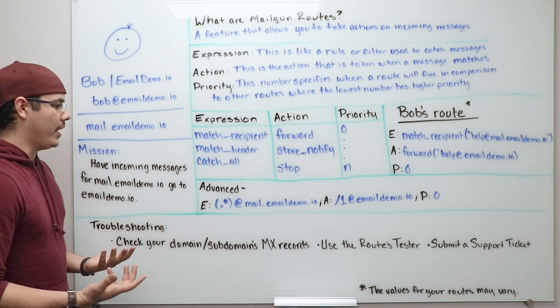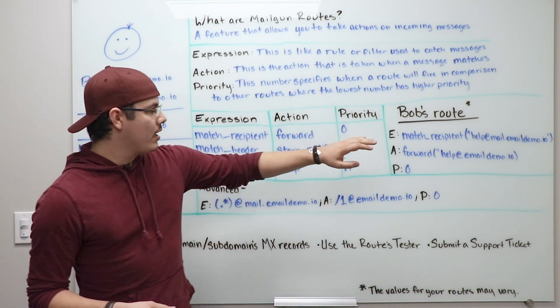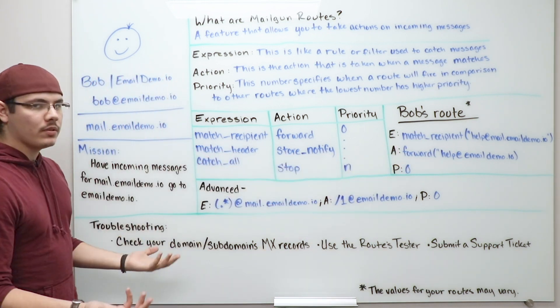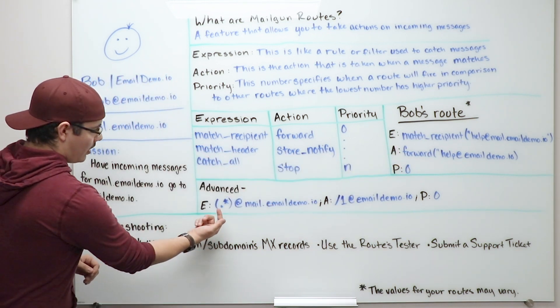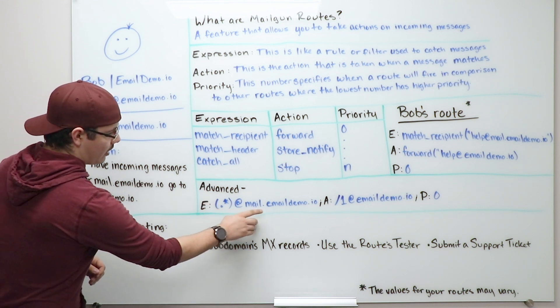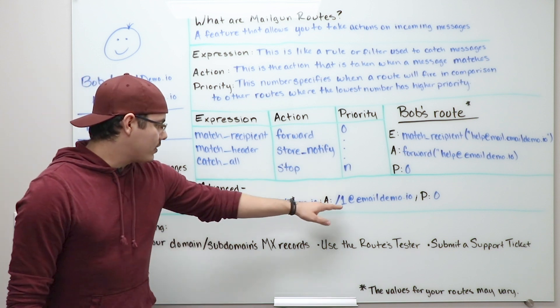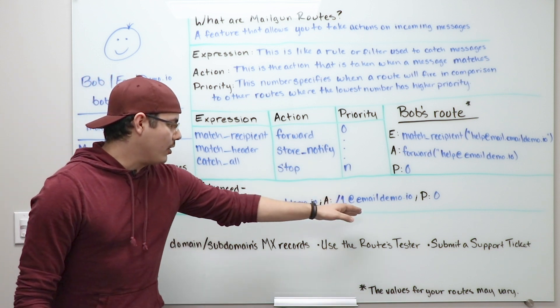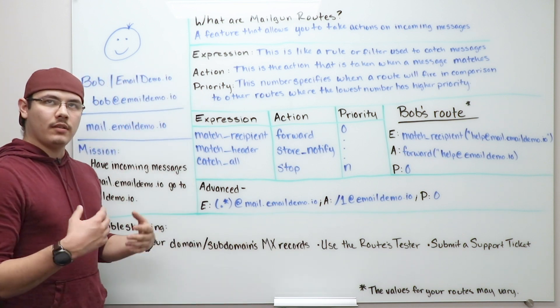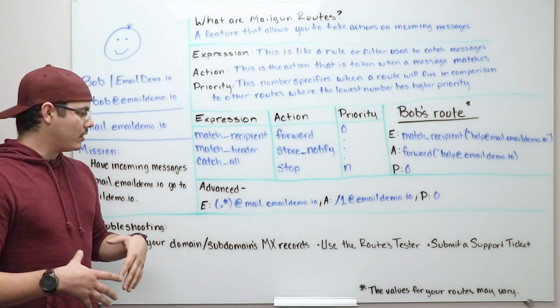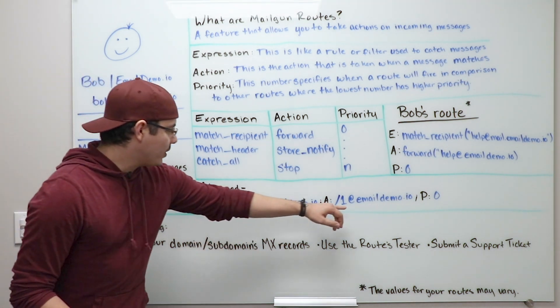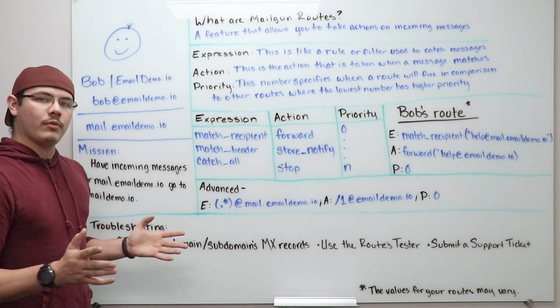Now to get a little bit more advanced, if he didn't want to have to make a new route for every person that is at emaildemo.io, he could do something like this. Basically this is like a little wildcard and it says anything at mail.emaildemo.io forwards to this slash one at emaildemo.io with a priority of zero. What this is, is a regex expression or a named capture for a route where we take this portion and just place it here, so you have one route for everyone.